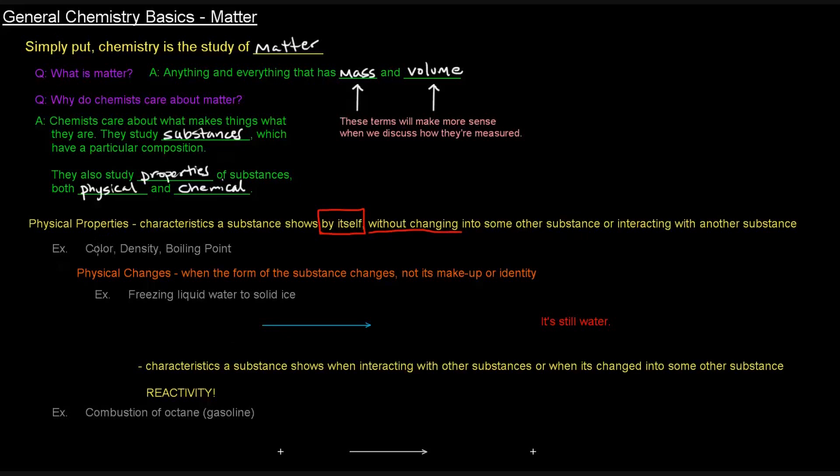So some examples are color or density, boiling point, even melting point. Color, for instance, like water. Water is clear when it's a liquid and also when it's solid as well. That's a physical property. Water's density at 25 degrees Celsius and one atmospheric pressure is one gram per milliliter. That can vary slightly. But the point is these are physical properties. These are characteristics of a substance that are independent of another substance interacting with this particular substance. I use the word substance a lot there, but hopefully I can kind of explain this with an example.